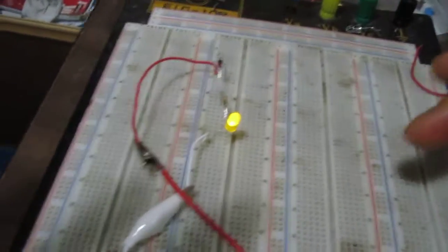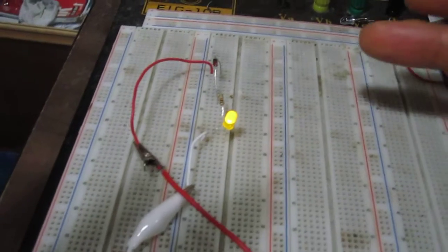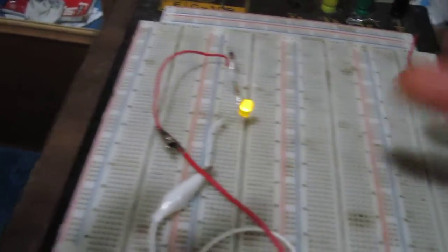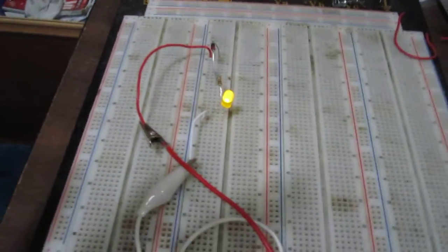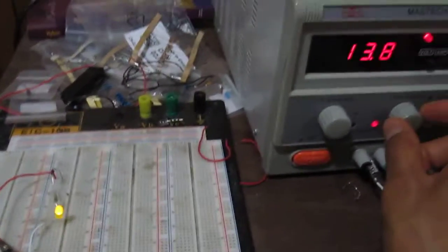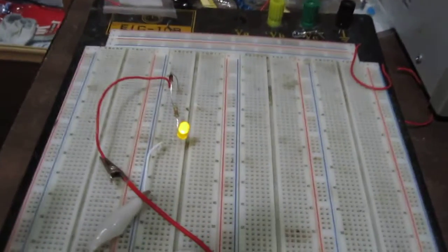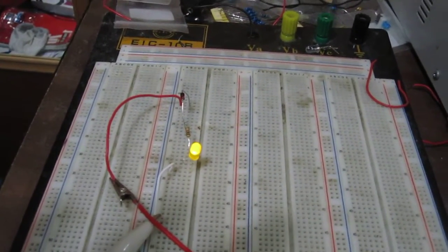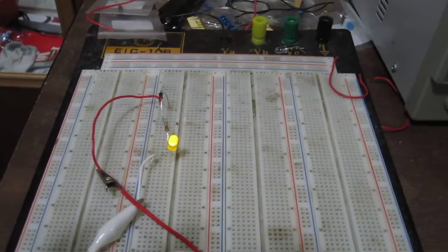You can use this with any zener diode value, any breakdown voltage, to get any voltage level indicator value that you need. So this is simply how a zener diode can be used as a voltage level indicator.